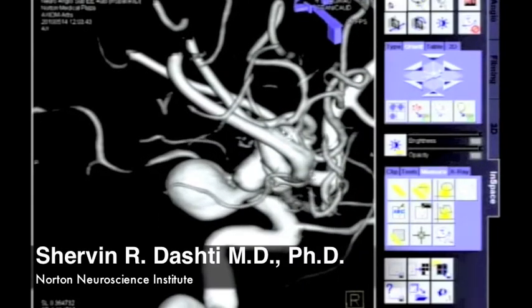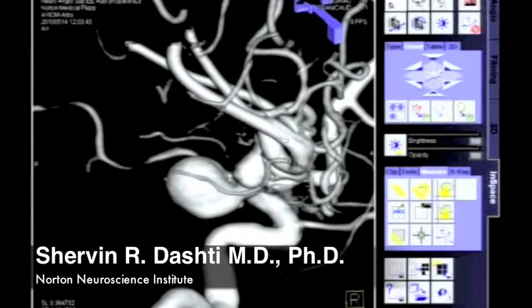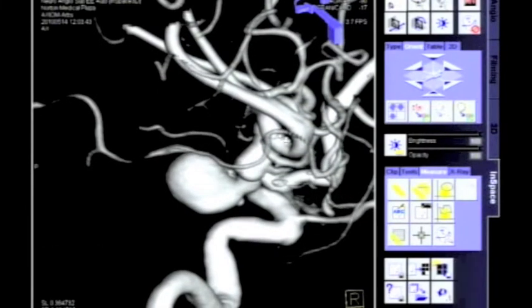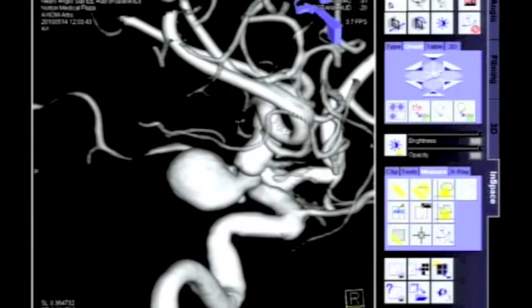Here we are looking at a three-dimensional angiogram of a large PCOM aneurysm. By manipulating this rotational model, we are able to come up with the proper working angles to treat the aneurysm.